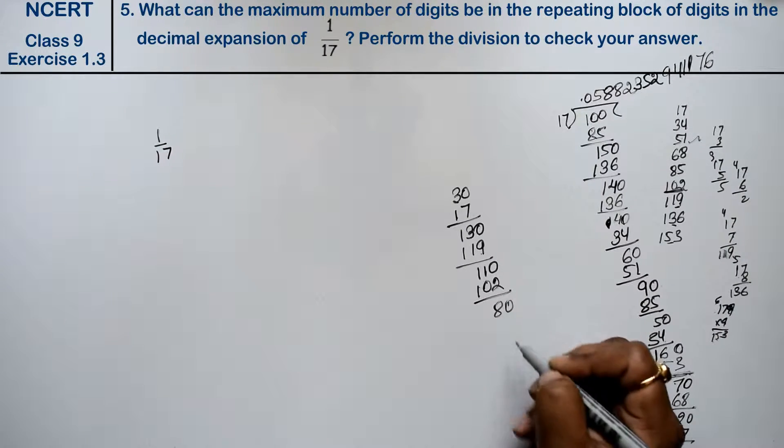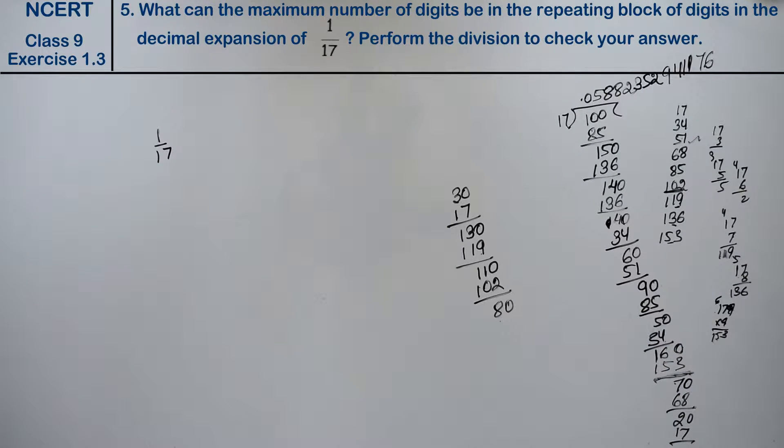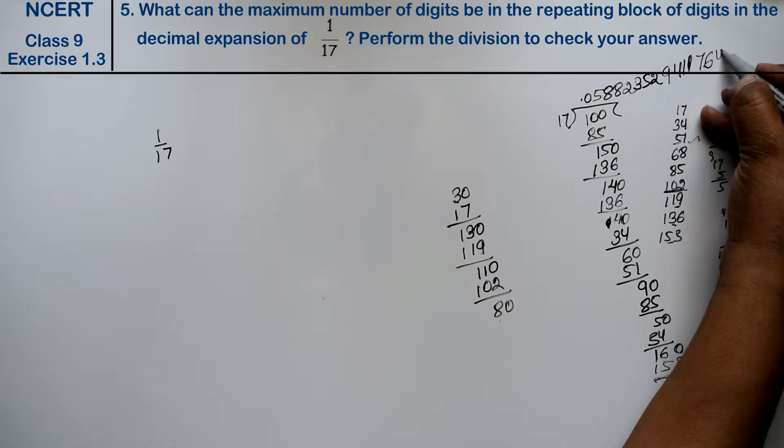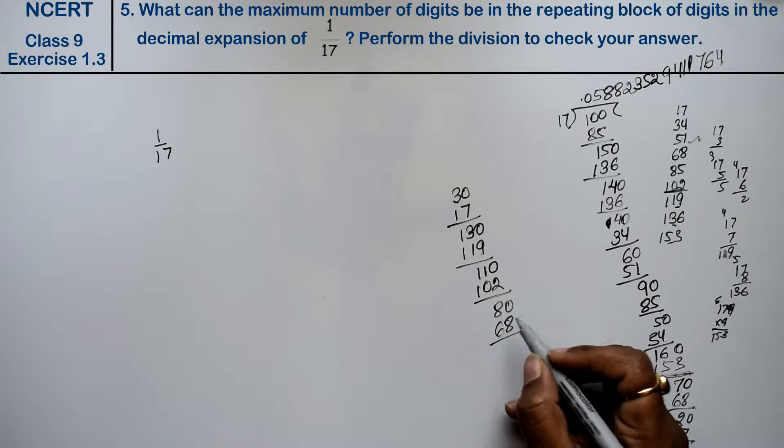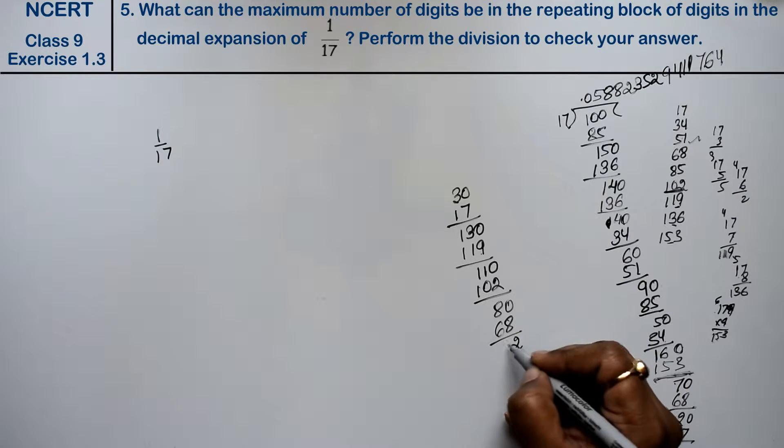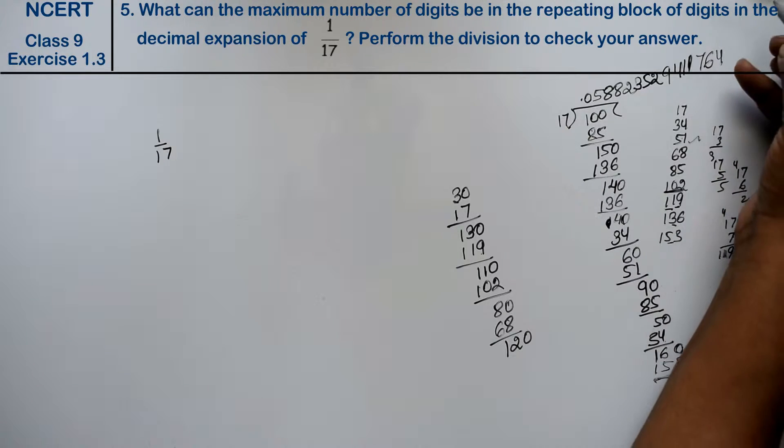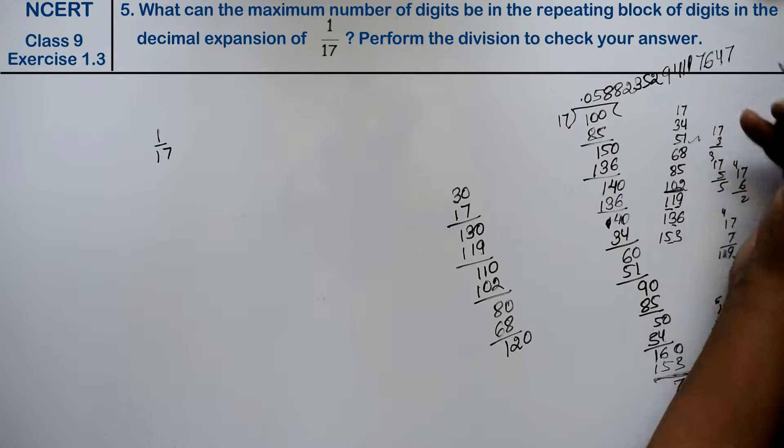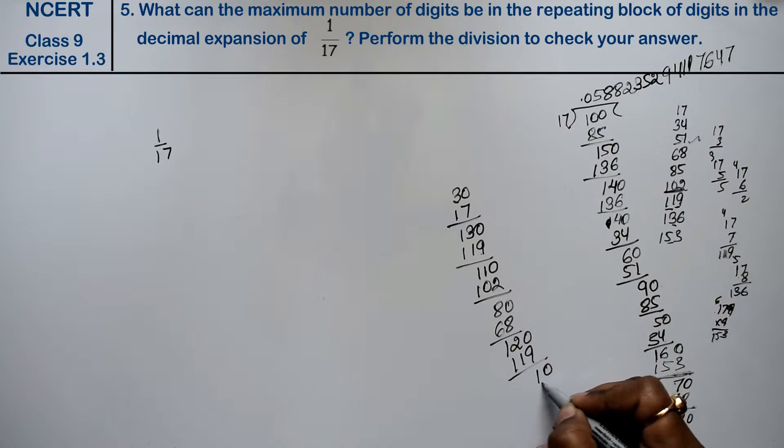80 divided by 17, 4 goes in. Right friends, that's 68. See, no value has repeated yet. 10 minus 2 gives 120. This is 119, so 7 goes in. Again 119 is subtracted, leaving 1, then 10.